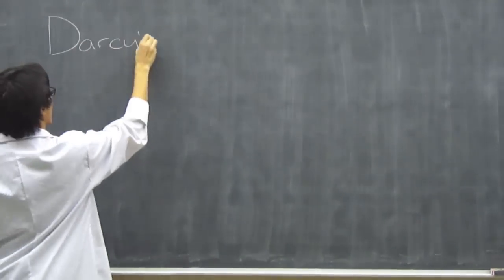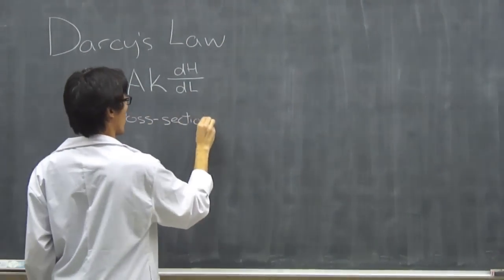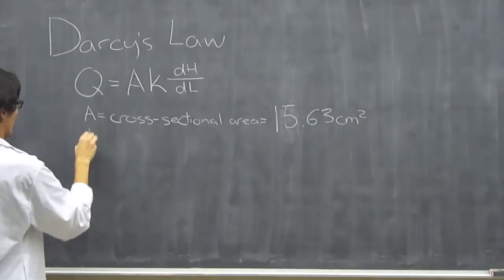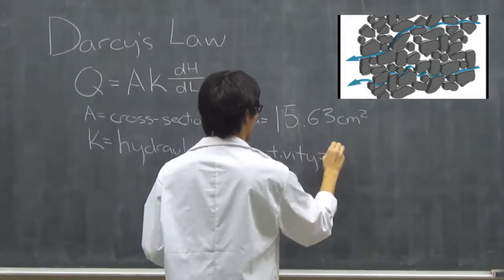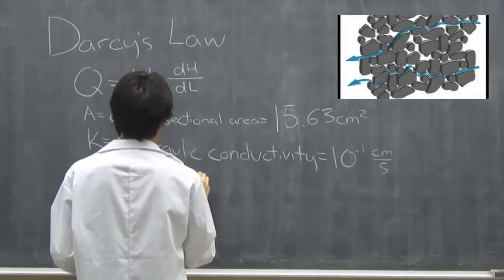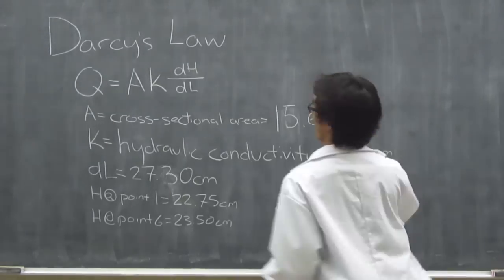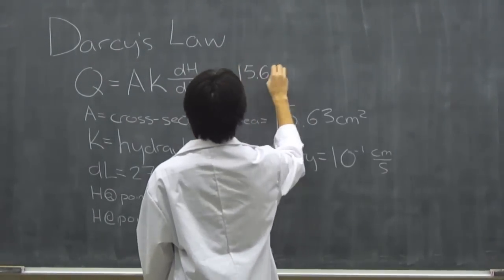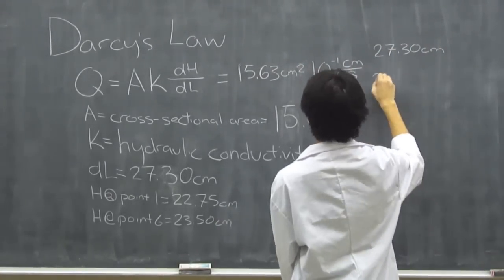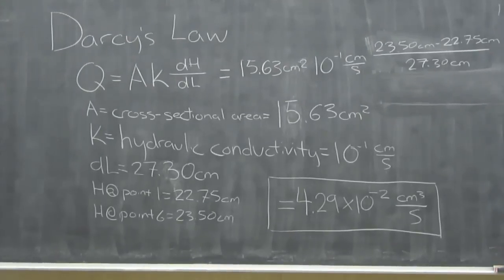Let's use what we measured to determine some characteristics of the model. First, we're going to use Darcy's Law, which relates the flow rate of water inside the saturated medium. K is the hydraulic conductivity — a measure of a soil's ability to transmit water. Good aquifers, such as those made of sorted gravel and sand, have high hydraulic conductivity and high fluid flow. In this example, we have used the value of 0.1 cm per second for well-sorted sand. DHDL is the slope between two points. We see that the final flow is 4.29 × 10⁻² cubic centimeters per second.